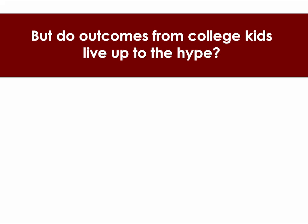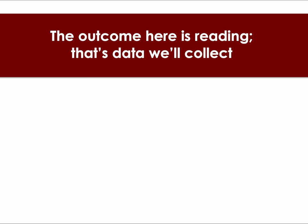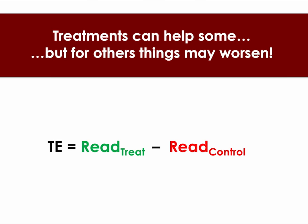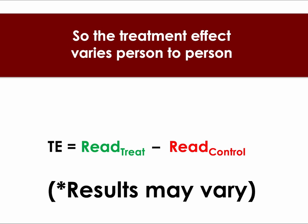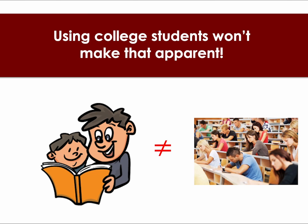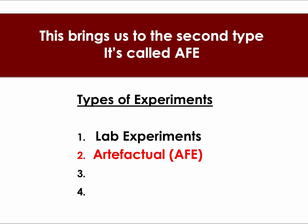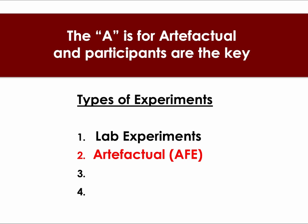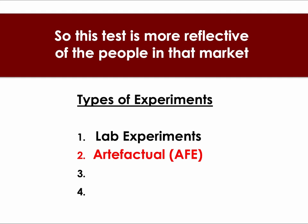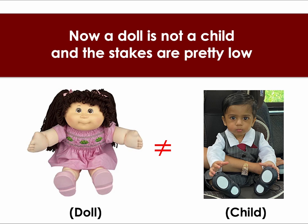But do outcomes from college kids live up to the hype? The outcome here is reading — that's data we'll collect, and the difference in outcomes is called the treatment effect. Treatments can help some but for others things may worsen, so the treatment effect varies person to person. Meaning if you want to test if your app helps parents, using college students won't make that apparent. This brings us to the second type — it's called AFE, A-F-E — artefactual — and participants are the key. The setting's still abstract but the subjects are on target, so this test is more reflective of the people in that market.